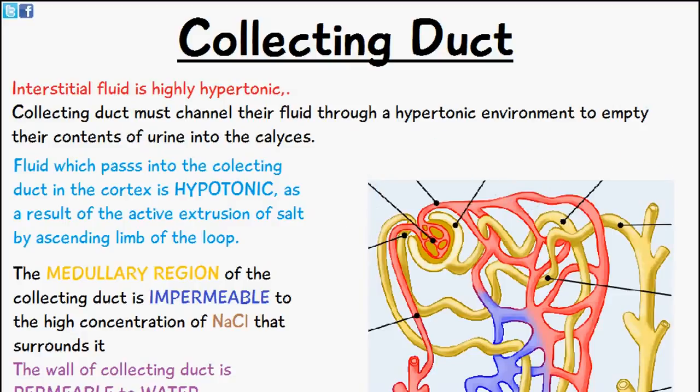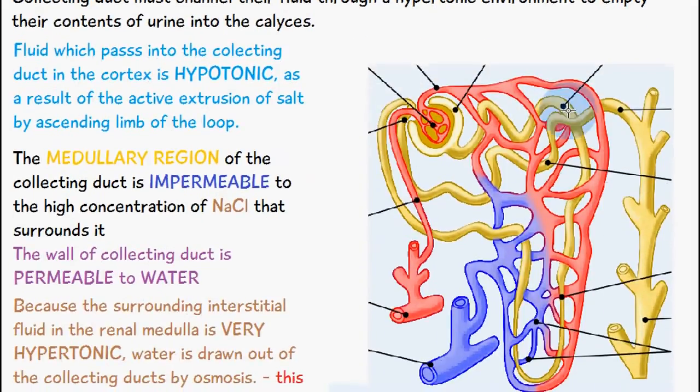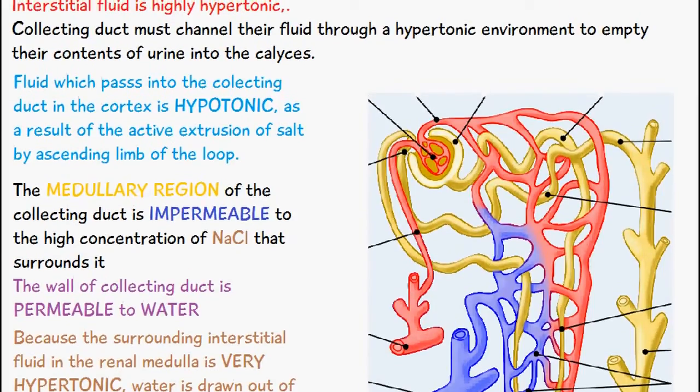What we know already from the last few videos is the fluid which is surrounding the collecting duct in the renal medulla is very hypertonic, very highly concentrated, and that's mainly due to the active transport of sodium chloride out of the ascending limb of the loop of Henle.